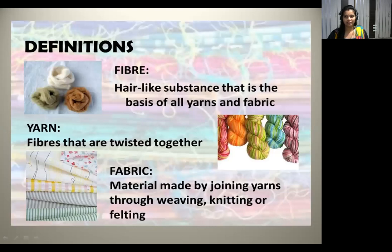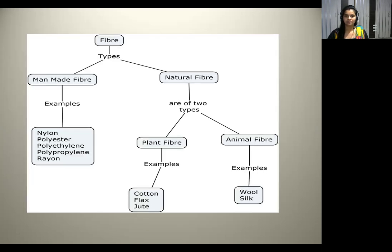The thin strands of thread that we see are made up of still thinner strands which are called fibers, as shown in the picture. Now let us look at the definitions. Fibers are the small hair-like structures that form the basis of all the yarns and fabric. These fibers are twisted together to form the yarns. Fabric is a material made by joining yarns together through weaving, knitting, or felting.